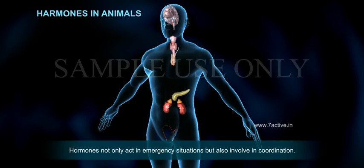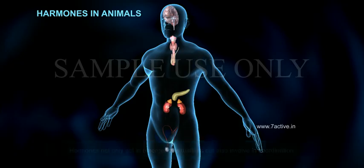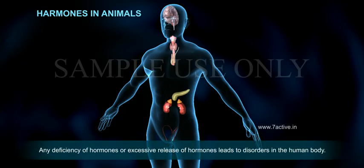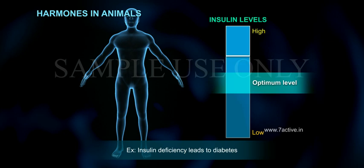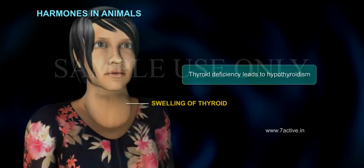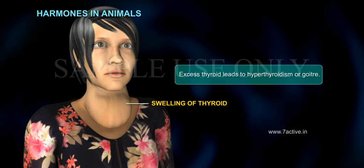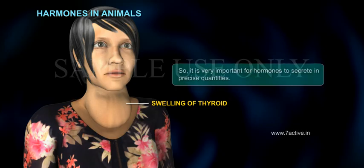Hormones not only act in emergency situations but are also involved in coordination. Any deficiency or excessive release of hormones leads to disorders in the human body. For example, insulin deficiency leads to diabetes, thyroid deficiency leads to hypothyroidism, and excess thyroid hormone leads to hyperthyroidism or goiter. So it is very important for hormones to be secreted in precise quantities.